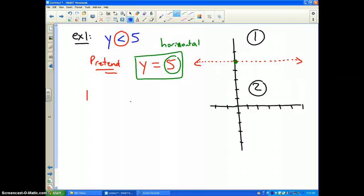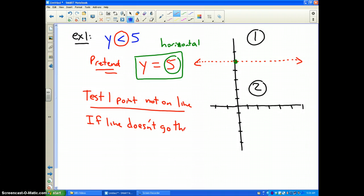Only half of those coordinates will work in this particular problem. So, what we always need to do is we need to test one point not on the boundary line. And I always recommend if your line doesn't go through (0, 0), use that point as the test point.